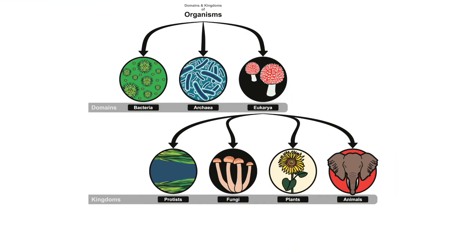The largest classification groups are called domains, and there are only three of them: eukarya, bacteria, and archaea. Most of the organisms you are familiar with—animals, plants, fungi, and protists—are in the domain eukarya. Each of these four groups makes up a kingdom. The archaea and bacteria domains have only one kingdom each, and contain microscopic, single-celled organisms.